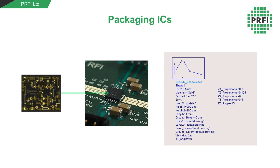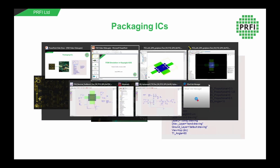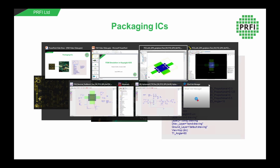We design our ICs using Keysight ADS, and for low frequency applications and 50 ohm transitions, we can often use the built-in wire bond model shown here. This allows us to specify the shape of the wire bonds and get a good idea of the resulting inductance. However, this approach struggles to model more complex transitions, such as those between multiple die in a package.